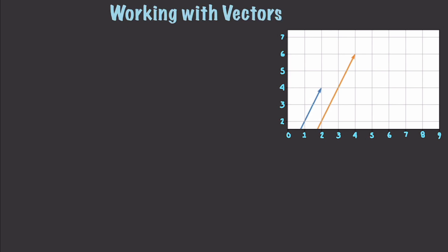So let's say we have a vector and we want to scale it by two. We are essentially just multiplying it. And you can see an example over here in a graph of exactly what would happen. This is the original vector, and this is the scaled vector. If we wanted to add vectors, let's keep the two, three here.